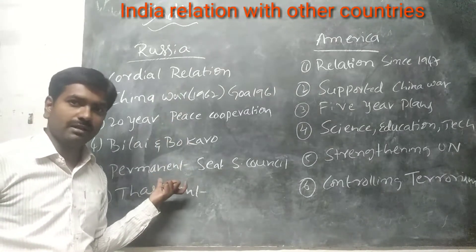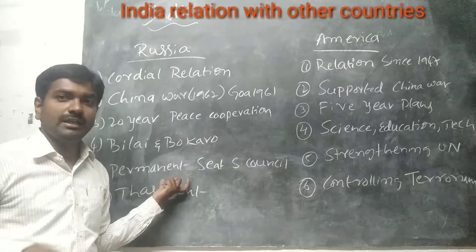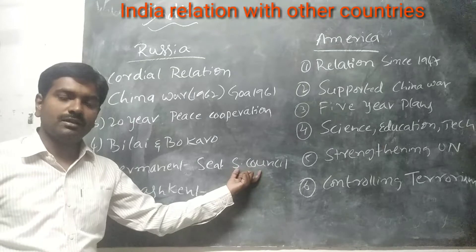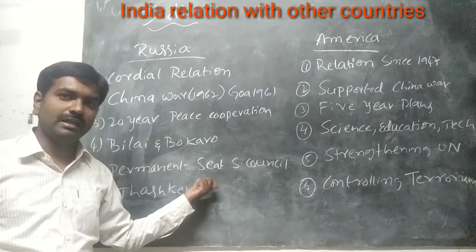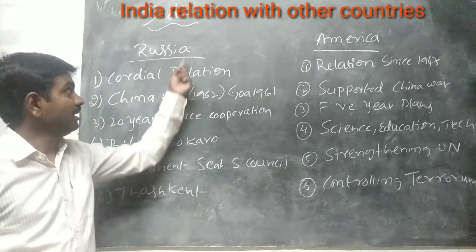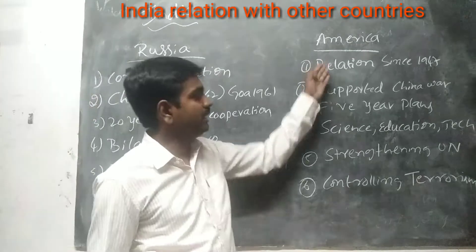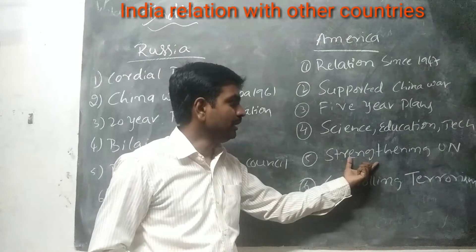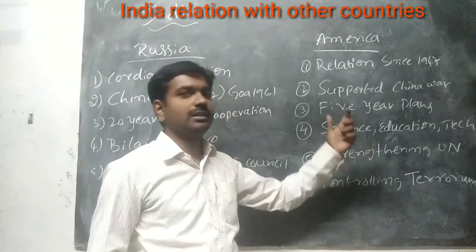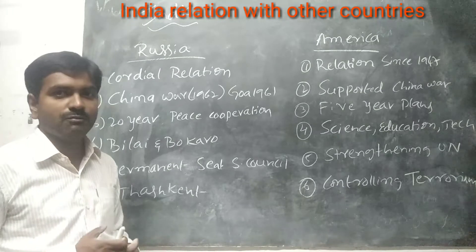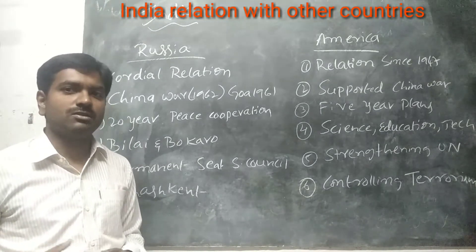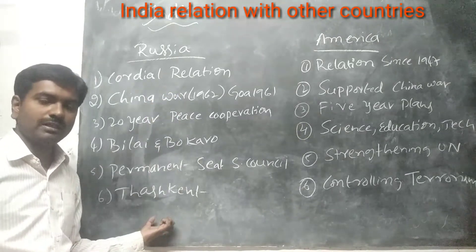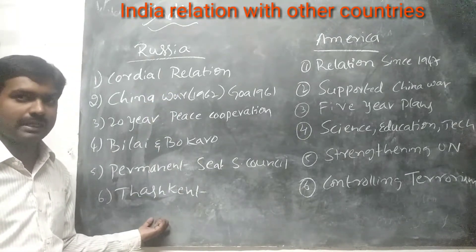Russia is giving complete support for India to become a permanent member of the UN Security Council. Both India and Russia have decided to strengthen the United Nations. Russia also gave support for the Tashkent Treaty between India and Pakistan.